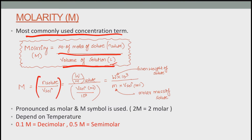Molarity is number of moles of solute upon volume of solution. Number of moles of solute can be calculated by given weight of solute upon molar mass of solute. If volume is given in millilitres, then we divide by 10³ to convert it into litres. If volume is given in litres, we can directly use this expression.